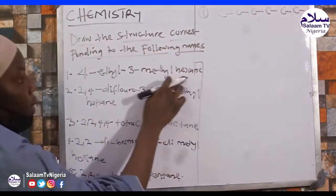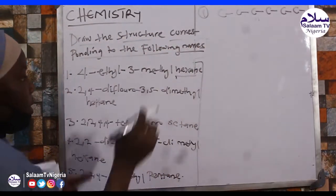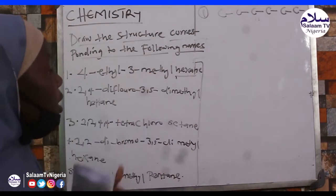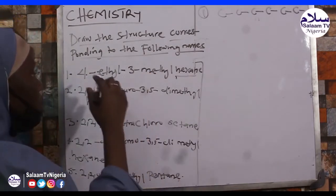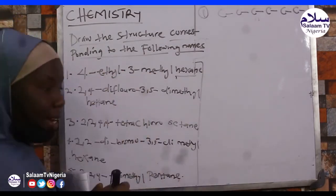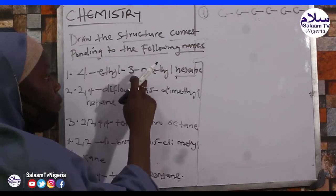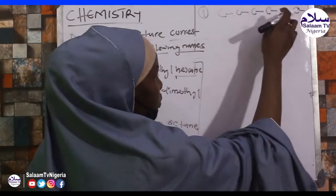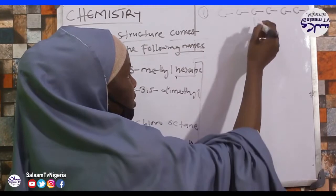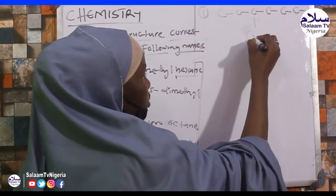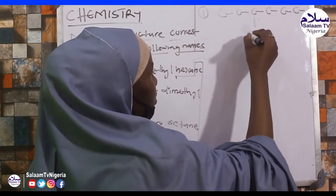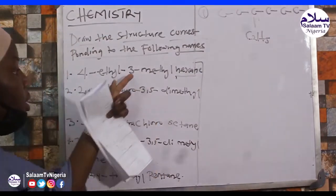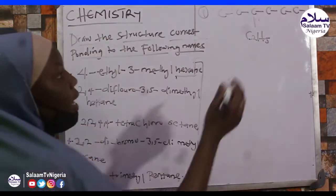The parent name is hexane. Under position 4 we have ethyl (C2H5), and under position 3 we have ethyl — wait, methyl. So at carbon 4 we place an ethyl group, and at carbon 3 we place a methyl group.